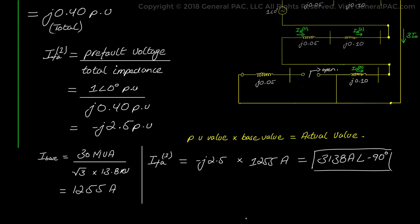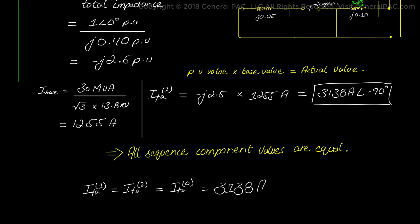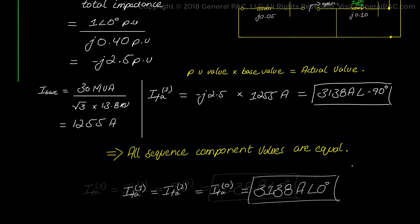As stated earlier, all sequence component current values are equal because the positive, negative, and zero sequence networks are connected in series, so the same current flows through all three. Therefore, positive sequence current equals negative sequence current equals zero sequence current, which equals 3138 amps at the angle of -90 degrees.